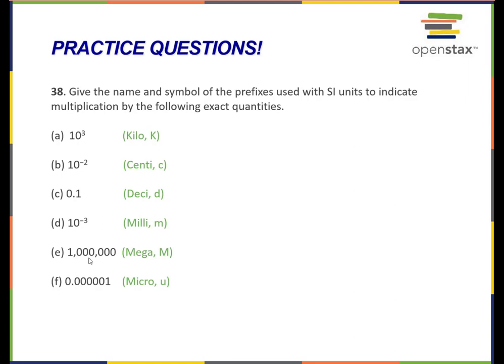A million is mega, capital M. And one millionth is micro, which is denoted with a mu, or sometimes just a u.